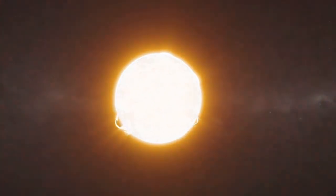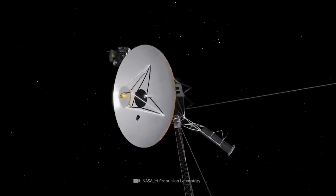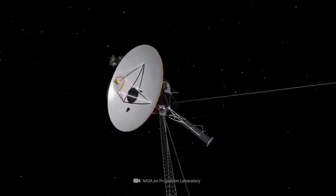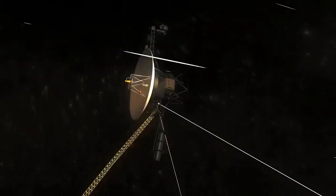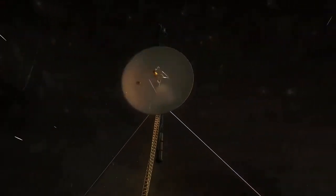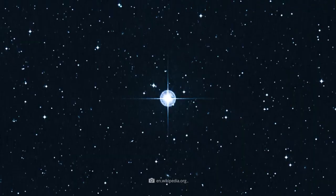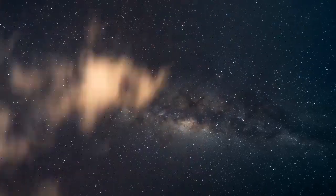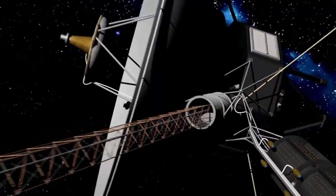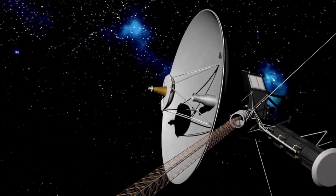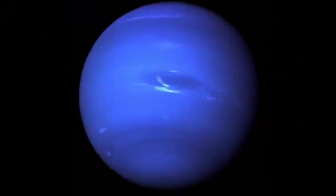The magnetosphere appeared unusually empty of plasma, leading scientists to believe Uranus had a magnetosphere fundamentally different from other planets in the solar system. Recent research shows that this anomaly was caused by a solar wind event that compressed Uranus's magnetosphere and pushed out plasma. Such events are extremely rare, occurring only about 4% of the time. If Voyager 2 had arrived a few days earlier or later, it might have observed completely different conditions.